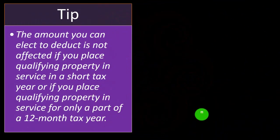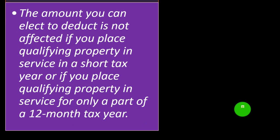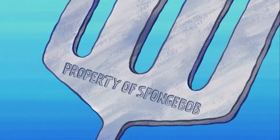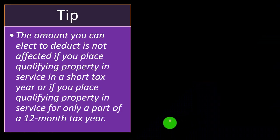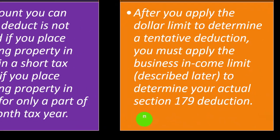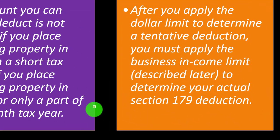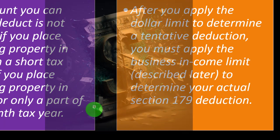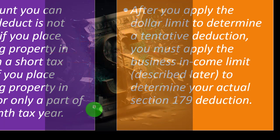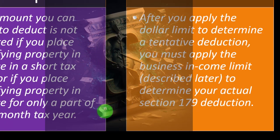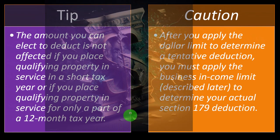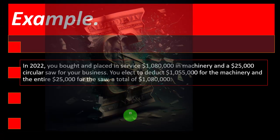Tip: the amount you can elect to deduct is not affected if you place qualifying property in service in a short tax year or if you place qualifying property in service for only part of a 12-month tax year. Caution: after you apply the dollar limit to determine a tentative deduction, you must apply the business income limit described later to determine your actual Section 179 deduction.